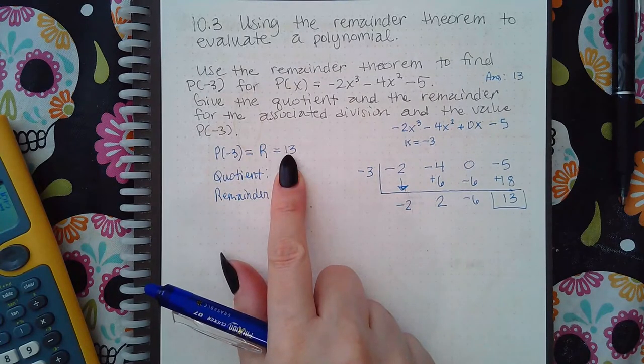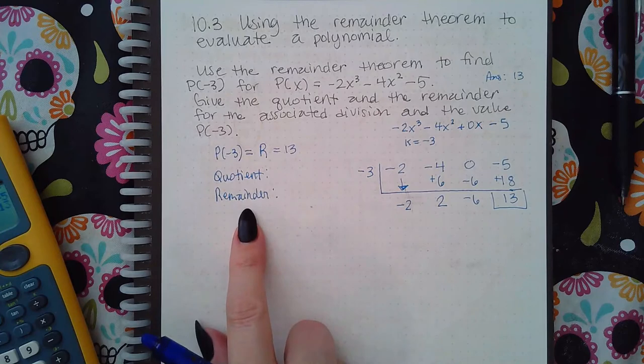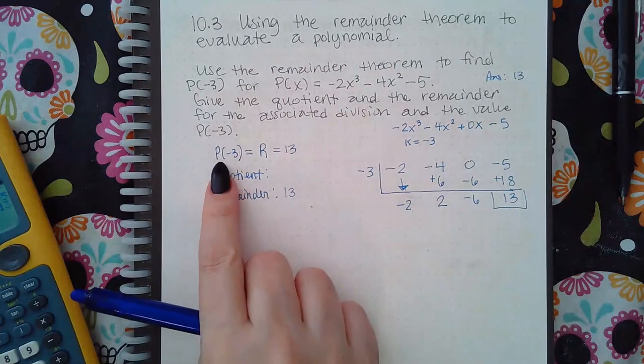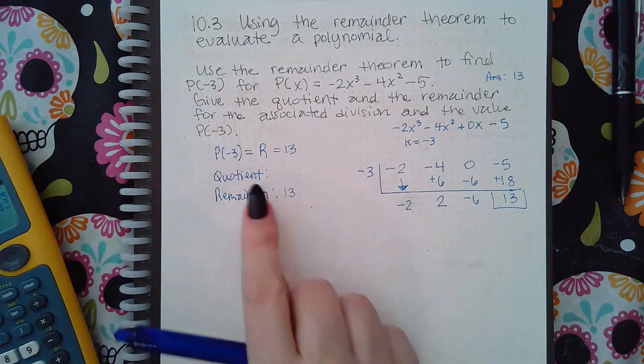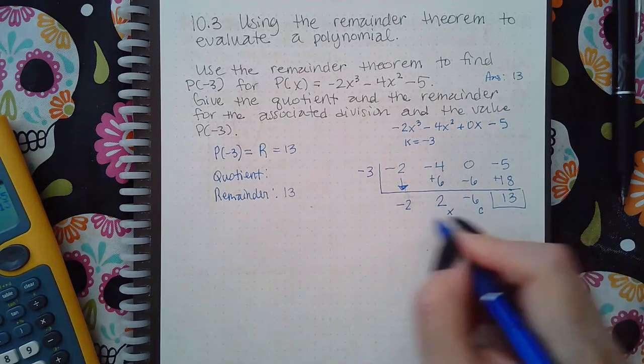It does ask us for the quotient and the remainder. Remainder we know is going to be 13, the same as the p(-3) value. The quotient is the harder part.